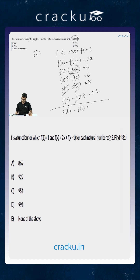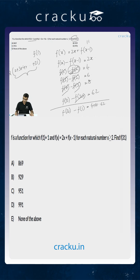This is equal to 4 plus 6 plus dot dot dot till 62. Or, taking 2 as a common factor, this is 2 times (2 plus 3 plus 4 plus dot dot dot till 31). The sum of the first n natural numbers — that is 1 plus 2 plus 3 plus dot dot dot till n — is equal to n(n+1) divided by 2.